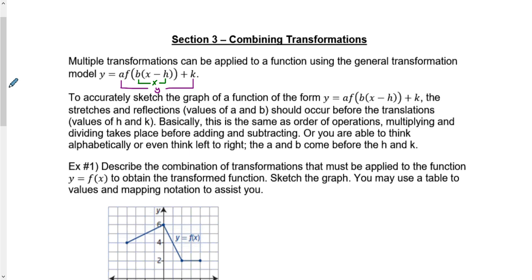To accurately sketch a graph of a function, the stretches and reflections — A and B — always have to occur first. Whether it's a vertical or horizontal stretch, or a reflection over the X or Y axis, those will always happen before we move left, right, up, or down. Basically it's the same as the order of operations: multiplying and dividing before adding and subtracting. Alphabetically, A and B come before H and K.